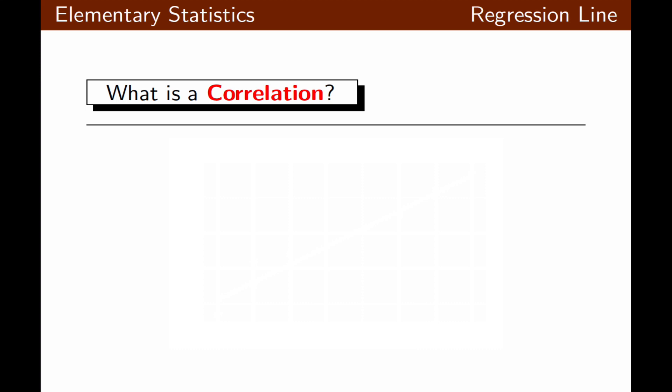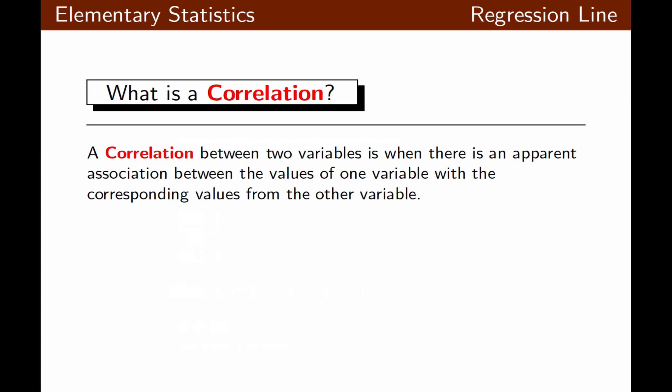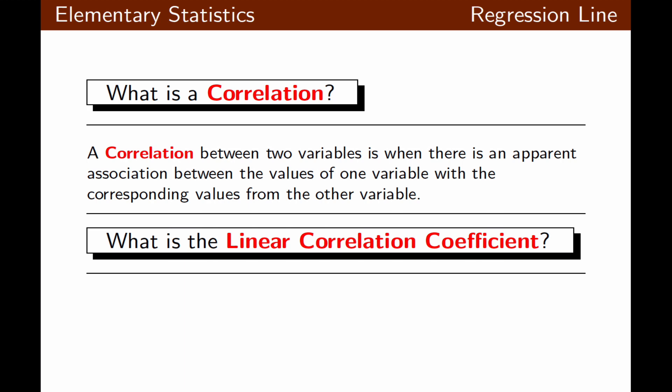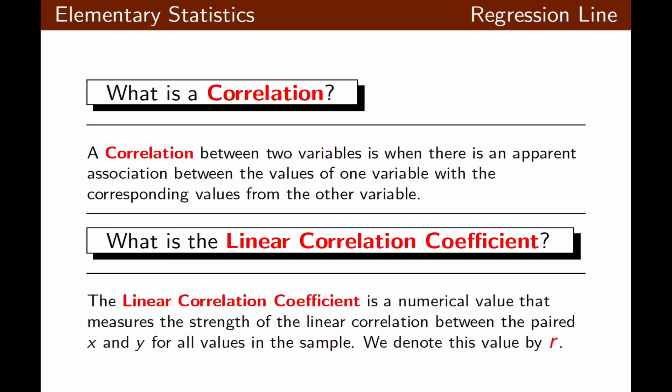What's the correlation? A correlation between two variables is when there is an apparent association between the values of one variable and the corresponding values of the other variable. The linear correlation coefficient is a numerical value that measures the strength of the linear correlation between the pairs of x and y for all values in the sample. It is denoted by r and is usually rounded to three decimal places.